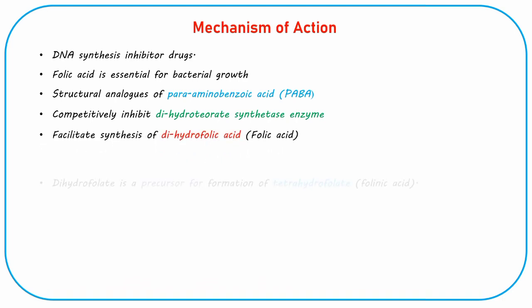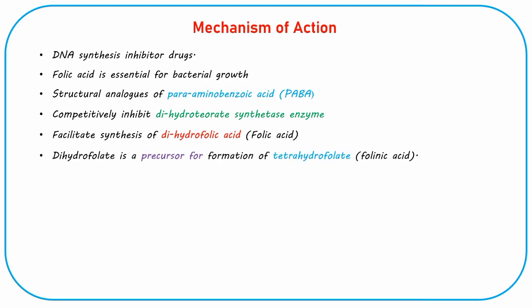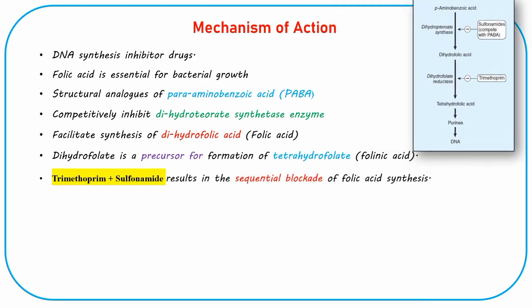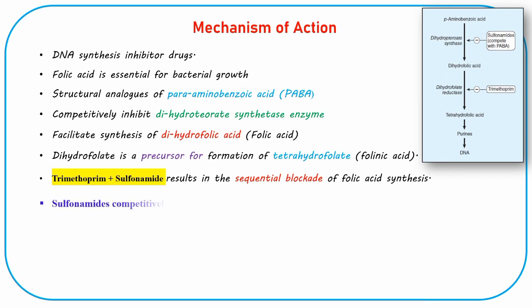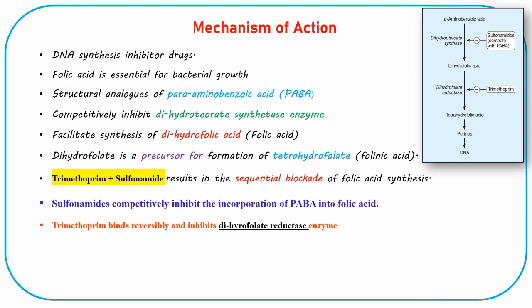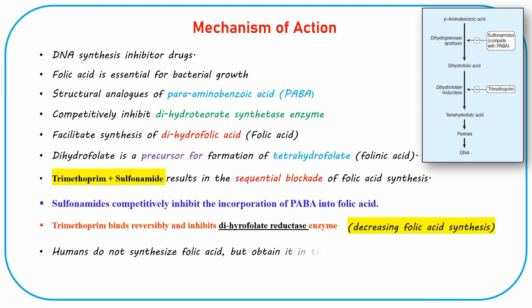Dihydrofolate is a precursor for the formation of tetrahydrofolate. The combination of trimethoprim and a sulfonamide results in the sequential blockade of folic acid synthesis. Sulfonamides competitively inhibit the incorporation of PABA into folic acid, thereby preventing the synthesis of folic acid. Trimethoprim binds reversibly to and inhibits the enzyme dihydrofolate reductase, an enzyme that reduces dihydrofolic acid to tetrahydrofolic acid, decreasing folic acid synthesis. Humans do not synthesize folic acid but obtain it in their diet.